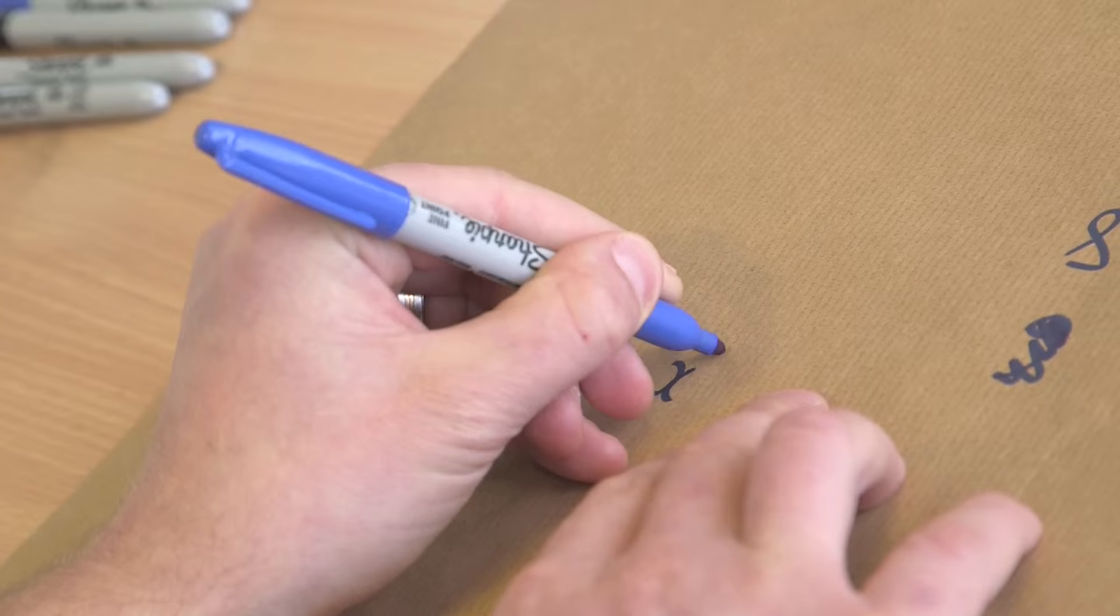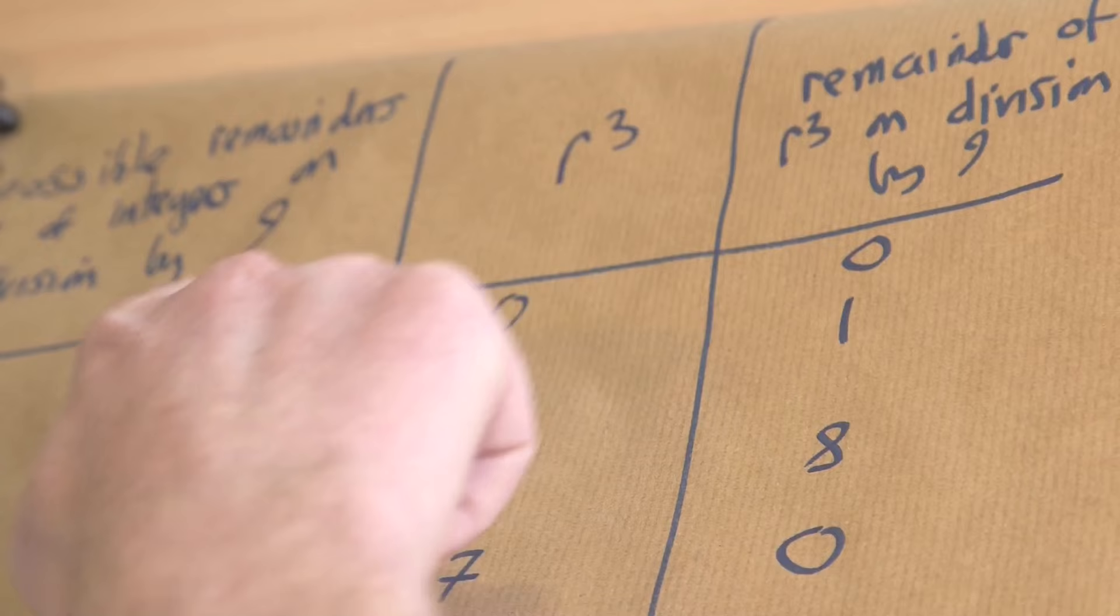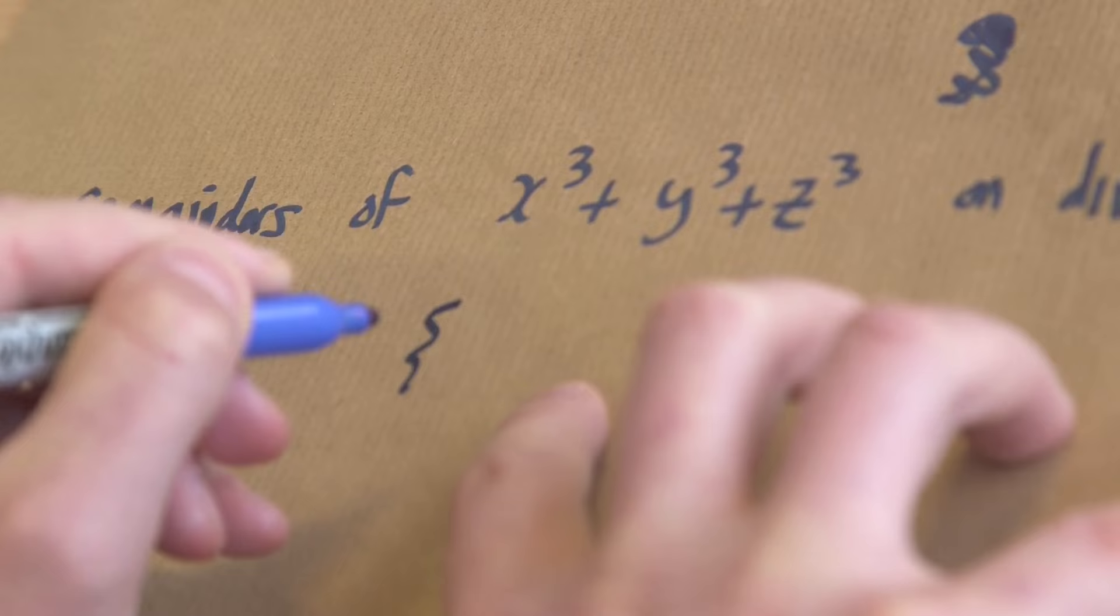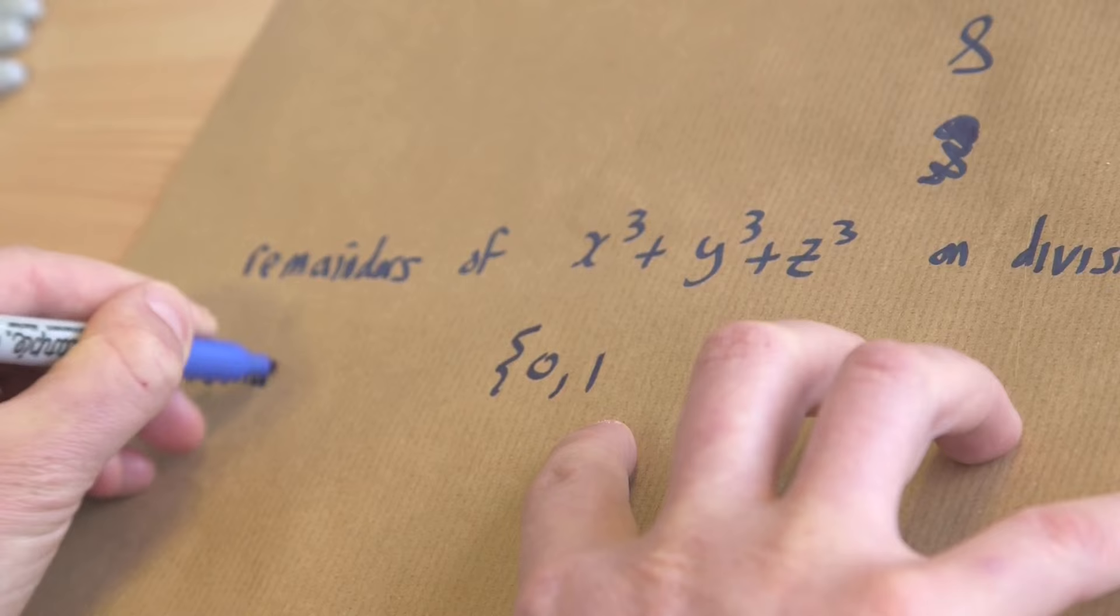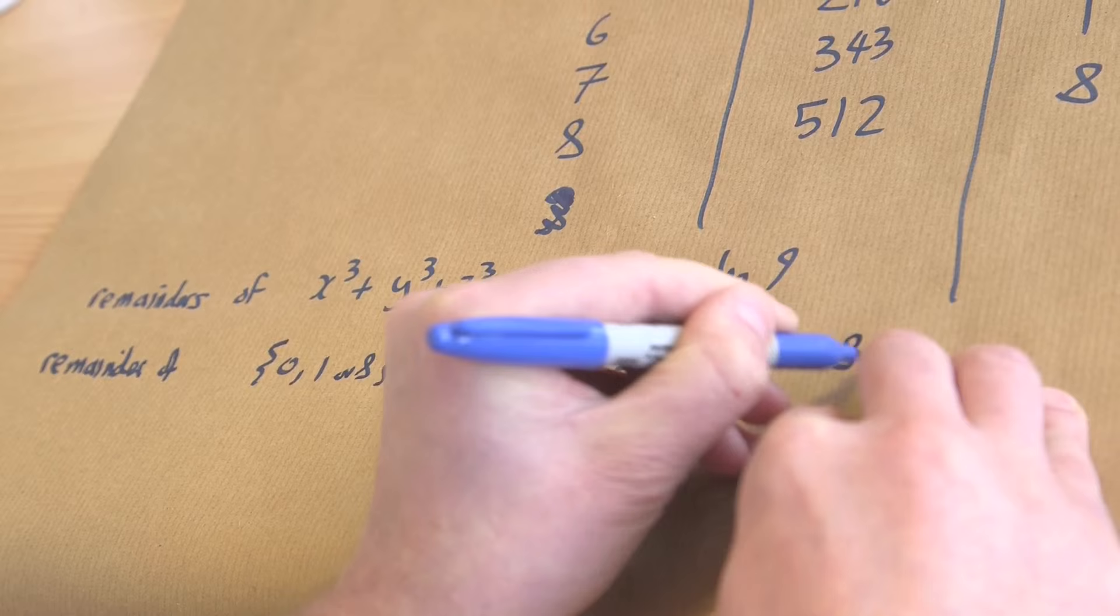So now all I want to do is think about the possible remainders of the sum that we're interested in, which is x cubed plus y cubed plus z cubed, again on division by 9. What I've observed here is that if I take any number and cube it and think about the remainder on division by 9, I only get three possibilities: either 0, 1, or 8.